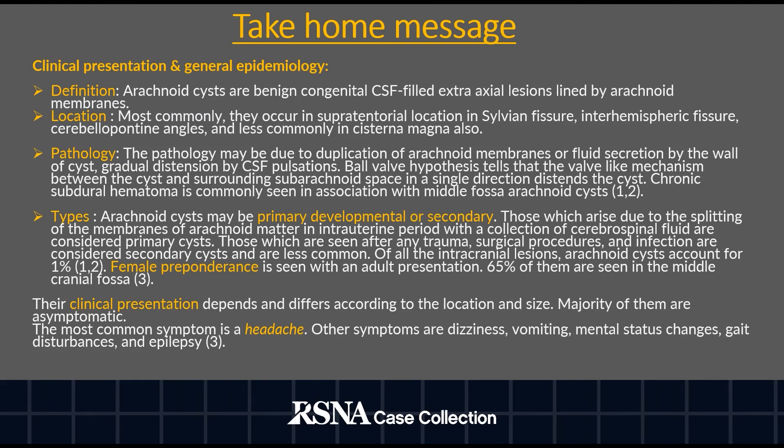The take-home message: arachnoid cysts are benign, congenital, CSF-filled extraaxial lesions lined by arachnoid membranes. They most commonly occur in a supratentorial location. They occur due to duplication of arachnoid membranes, fluid secretion by the cyst wall, or gradual distension by CSF pulsations. There is a hypothesis called the ball-valve mechanism between the cyst and the surrounding subarachnoid space operating in a single direction.